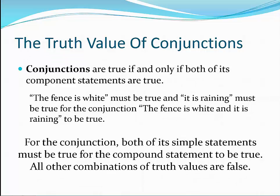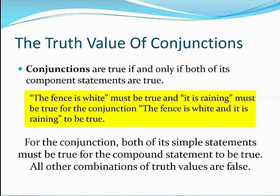Now, let's look at the truth value of conjunctions — in other words, when conjunctions are true or false. For the conjunction, both of its simple statements must be true for the compound statement to be true. For the fence is white and it is raining to be true, the statement the fence is white must be true, and the statement it is raining must be true. If either statement is false, or if both are false, the conjunction is false.